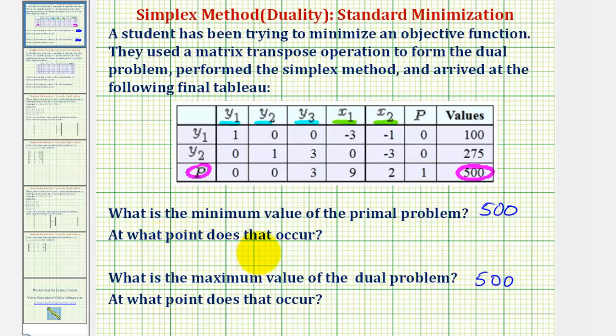To find the point at which the minimum value of the primal problem occurs, we look at the last entry of the columns associated with the slack variables, which again are the variables used in the objective function of the primal problem.